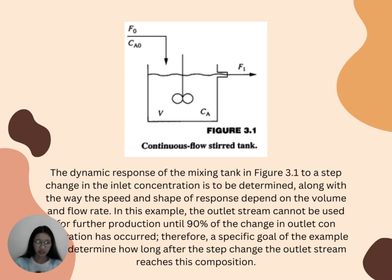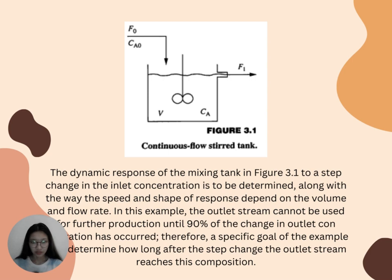Here on the third page, it shows Figure 3.1, the continuous flows tiered tank. The dynamic response of the mixing tank in Figure 3.1 to a step change in the inlet concentration is to be determined, along with the way the speed and shape of response depend on the volume and flow rate. In this example, the outlet stream cannot be used for production until 90% of the change in outlet concentration has occurred. Therefore, a specific goal of the example is to determine how long after the step change the outlet stream reaches this composition.